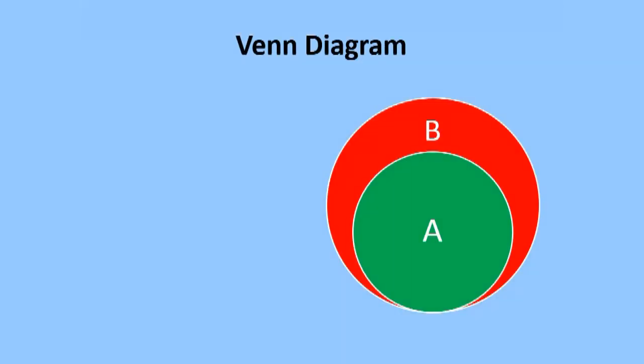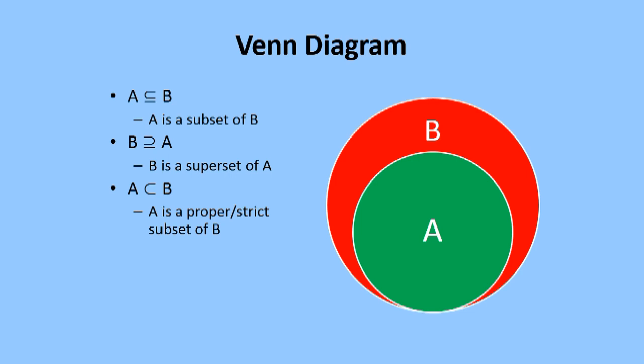Let us look at the following. A is a subset of B. B is a superset of A. Also, we can say that A is a proper or strict subset of B since A is smaller compared to B. B is a proper or strict superset of A since B is larger than set A.